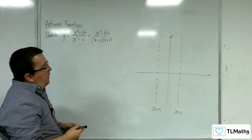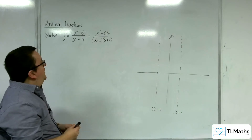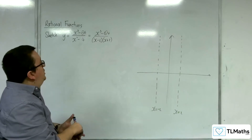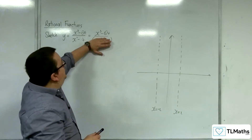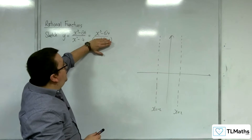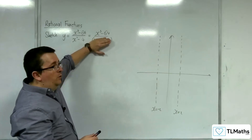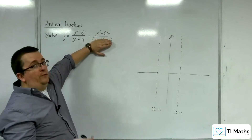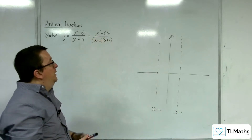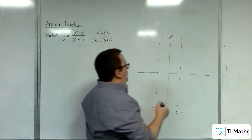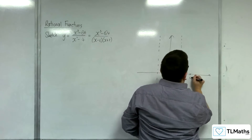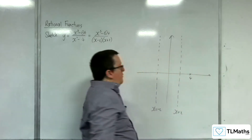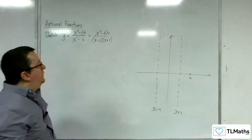Where it crosses the x-axis — that's when the numerator is 0. x cubed take away 64 equals 0, and the cube root of 64 is 4, so x equals 4 is the point where it crosses the x-axis.